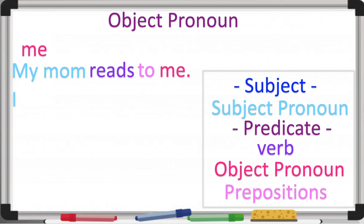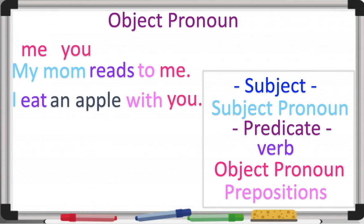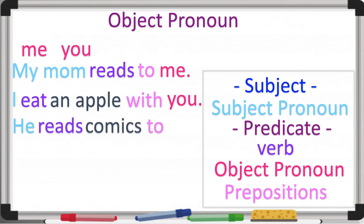Next: 'I eat an apple with you.' 'I' is my pronoun, 'eat' is the verb, 'with' is the preposition, and 'you' is the object pronoun. So 'you' remains the same for both the subject pronoun and the object pronoun. Then: 'He reads comics to her.' 'Her' is the object pronoun.